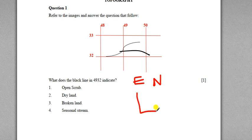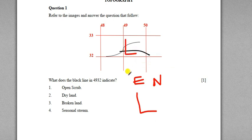You can remember this using the letter L. Draw an L within the grid — the easting is on the left and the northing is at the bottom. That is a simple technique to remember how to write the four-figure grid reference of a particular place. Coming back to this question: what does the black line in 4932 indicate? The options are open scrub, dry land, broken ground, and seasonal stream. The first three are not related to line symbols, so the answer is seasonal stream.